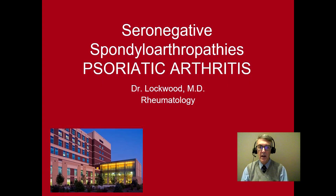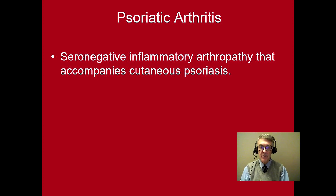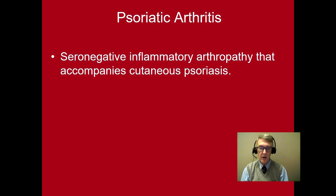Psoriatic arthritis is a seronegative inflammatory arthritis that occurs or accompanies cutaneous psoriasis. Note that it is seronegative, meaning there is a lack of a rheumatoid factor or antinuclear antibody. Sometimes it can be very difficult to find the psoriasis, and we'll talk about how we seek that out when we discuss examination.